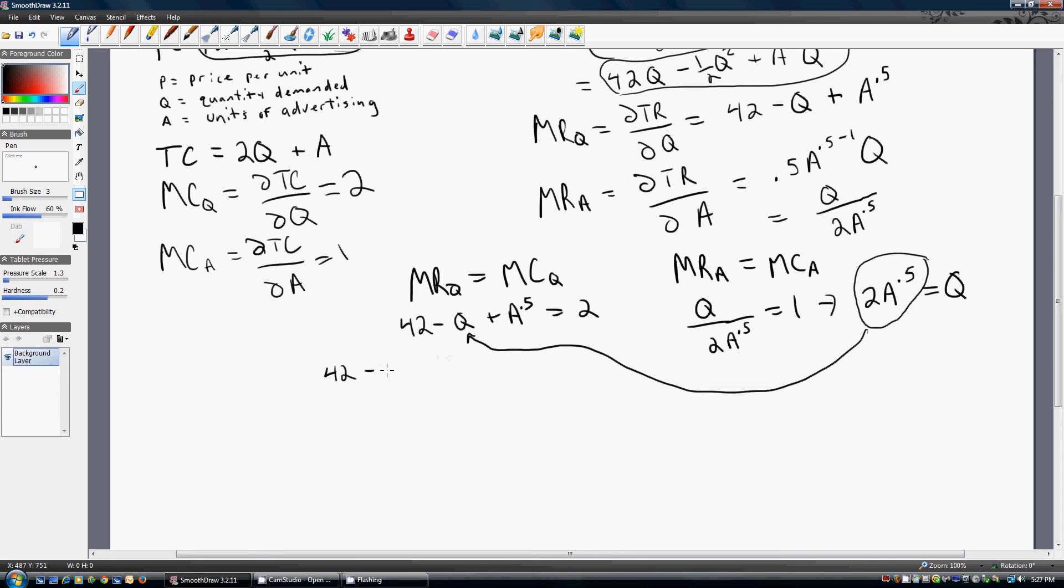We'll get 42 minus 2 times the square root of advertising plus the square root of advertising. And that all equals 2.